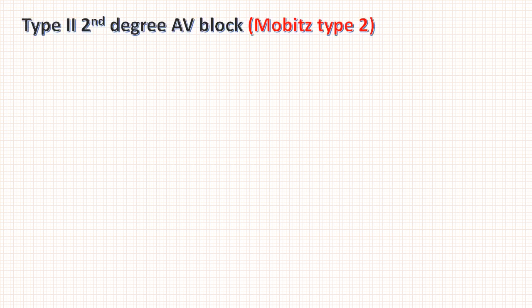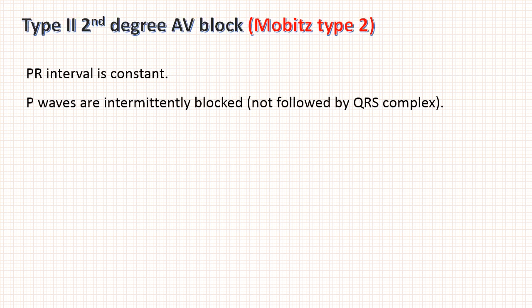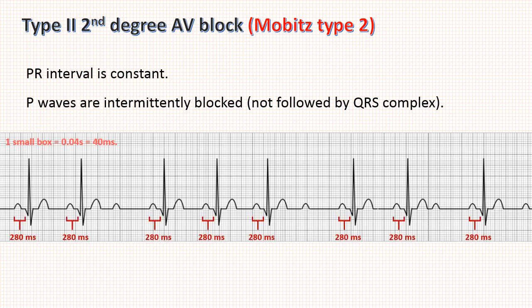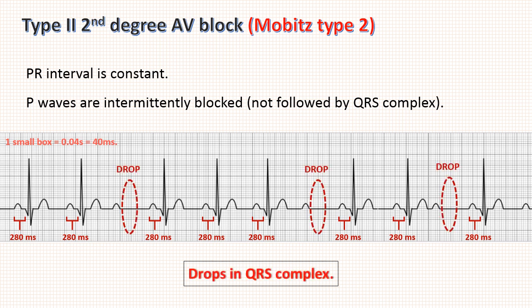Next is Type 2 2nd degree AV block. Here the PR interval is constant but P waves are intermittently blocked, often at unpredictable rates. Looking at this ECG, the PR interval is constant at 280ms but a P wave is occasionally not conducted. The keywords will be drops in QRS complexes.